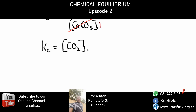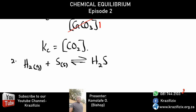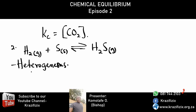Heterogeneous Example 2: H₂(g) + S(s) ⇌ H₂S(g). This is heterogeneous. The Kc expression is: Kc = [H₂S] over [H₂]. We simply omit the solid sulfur, or you can replace it with one.